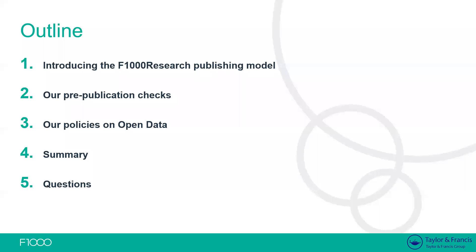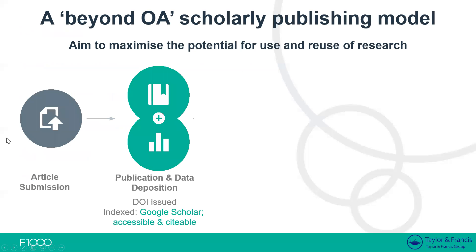This is a brief outline of what I'll be speaking about in today's workshop. I'll begin by explaining the F1000 research model, some aspects of which differ from a traditional academic journal and may be unfamiliar to you. I'll then talk about the pre-publication checks we conduct on every article submission to F1000 Research, including the IIARP gateway, and what an article requires to pass our checks. After that, I'll dedicate a section to our open data policies, which are a core pillar of F1000 Research. Finally, I'll summarize the checks and requirements and then open for questions.